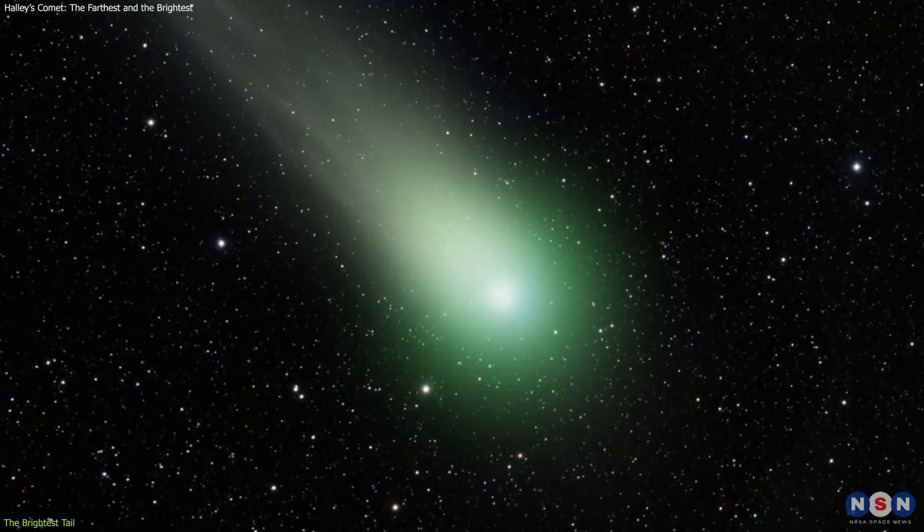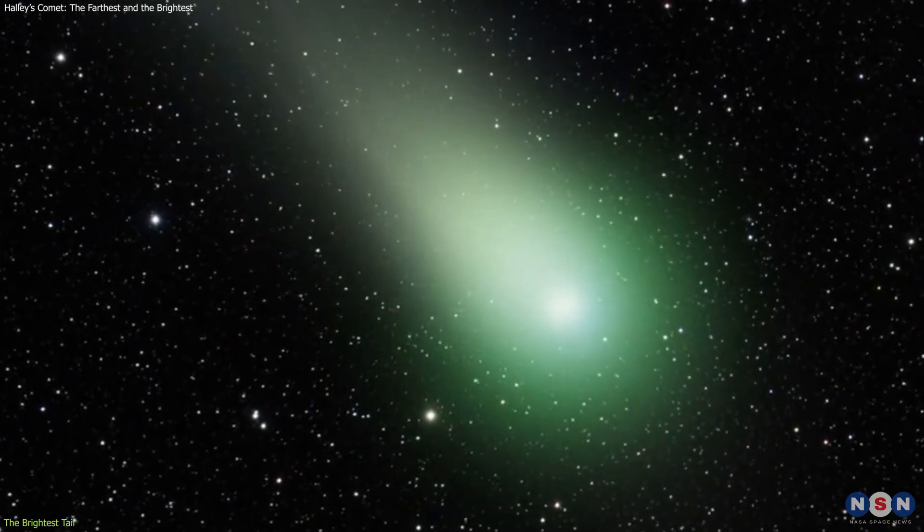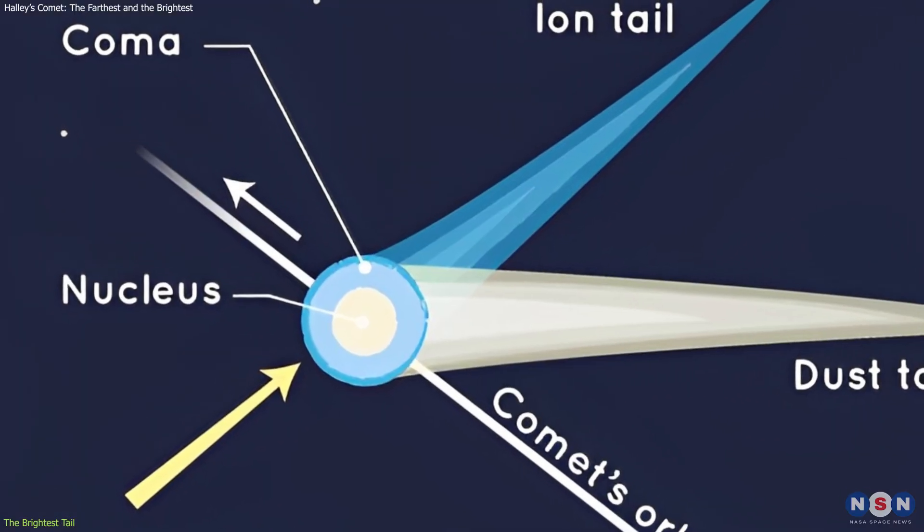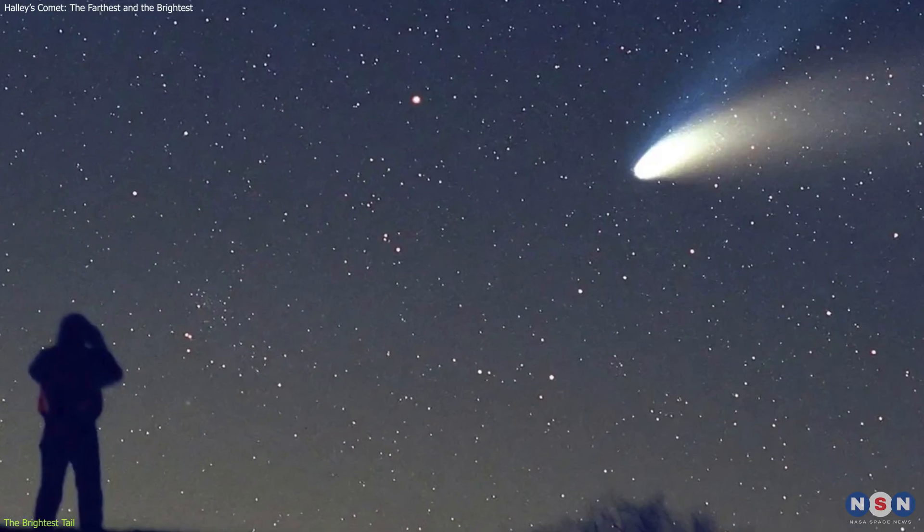The coma, however, can be much larger, up to 100,000 kilometers in diameter, which is about a quarter of the distance between the Earth and the Moon. The nucleus and the coma together form the head of the comet, which is what we usually see when we look at a comet.